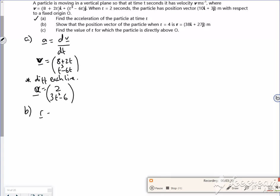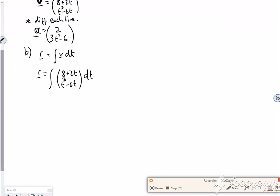So r is an integral of v dt. So I'm going to be careful how I do this. So I'm integrating 8 plus 2t and t cubed minus 6t. So this will show when you're sat in class now, or when you're sat in class, look at the person next to you and see if they've got a plus c at the end, or they've got little constants within it. Because I'm going to put a constant in each one.